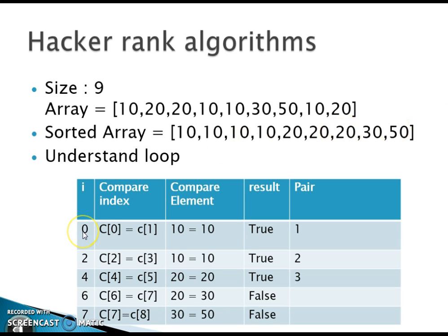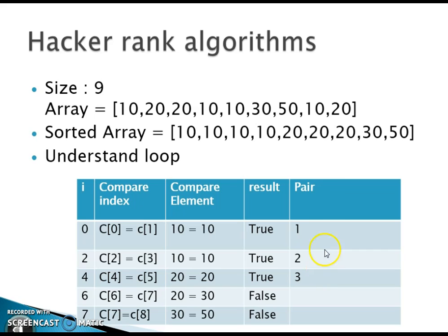We start from i equal to zero. C of 0 and C of 1 is 10 and 10, so that is one pair. Since zeroth and first have been covered, we start from the second. C of 2 and C of 3 is 10 and 10, which is true — that is the second pair. Then C of 4 and C of 5 is 20 and 20 — true, that is the third pair. Next, C of 6 and C of 7 is 20 and 30 — that does not match, so it is false.